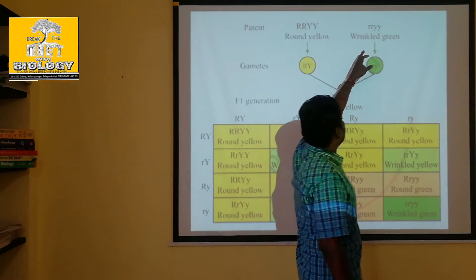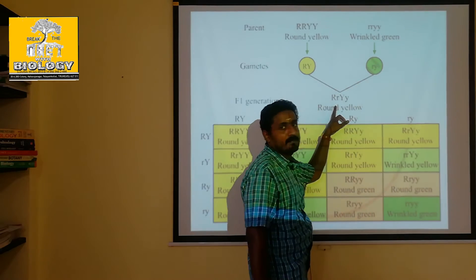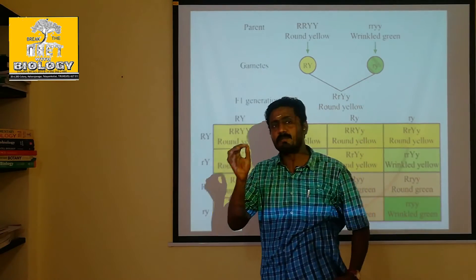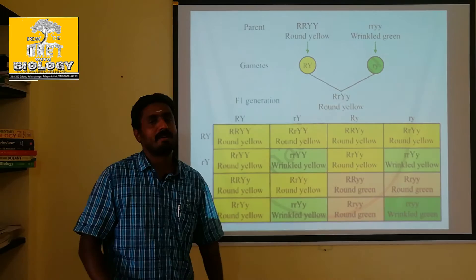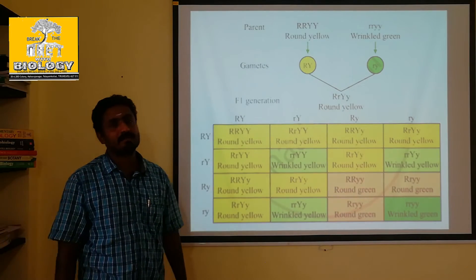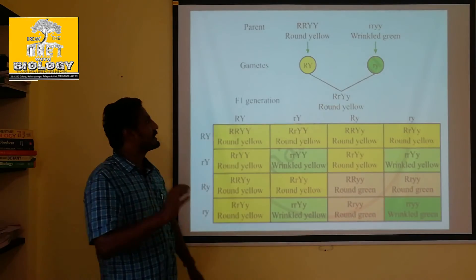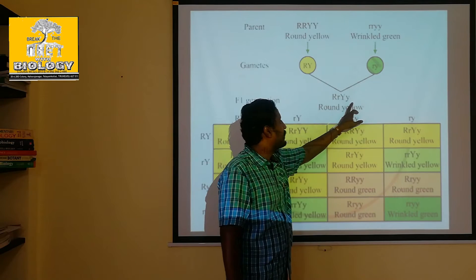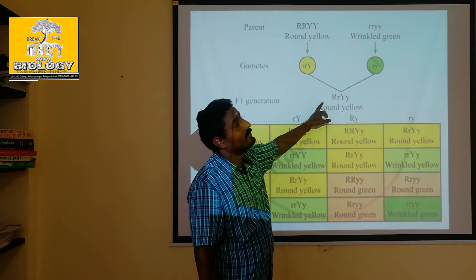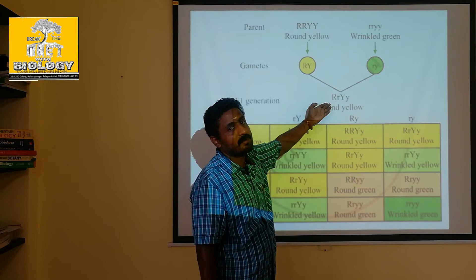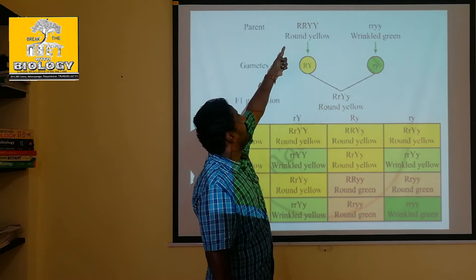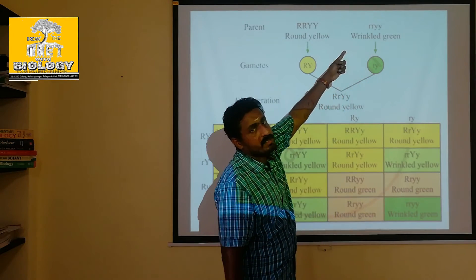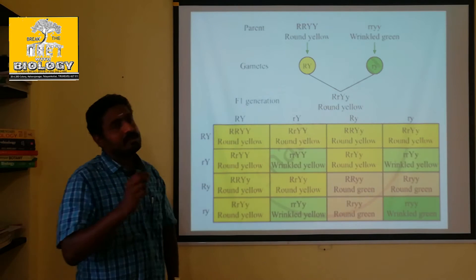The recessive parent is the parent and offspring. When we start to make the parent, what do we need to do? This is a round yellow plant. The genotype is capital R, small R, capital Y, small Y. The homozygous parent has small R, small R, small Y, small Y.